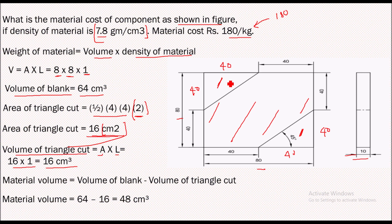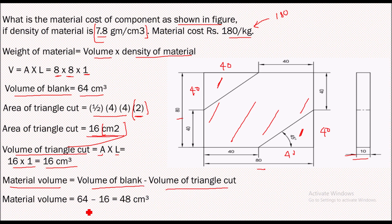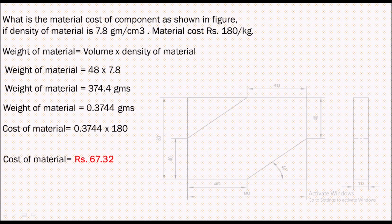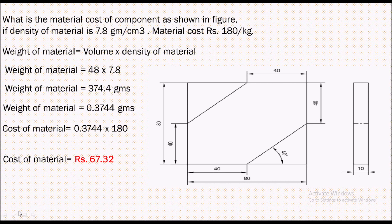We have the volume of the total blank and the volume of the two triangles, so we subtract to get the actual volume of this component. Material volume equals volume of blank minus volume of triangular cut. Substituting the values, we get the material volume to be 48 centimeter cube.